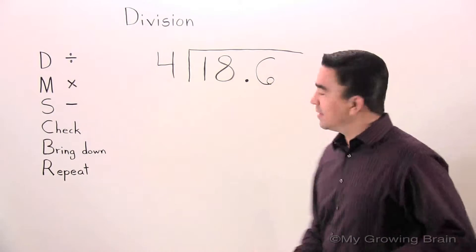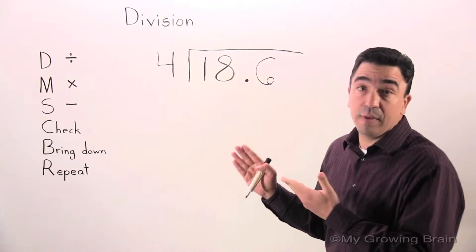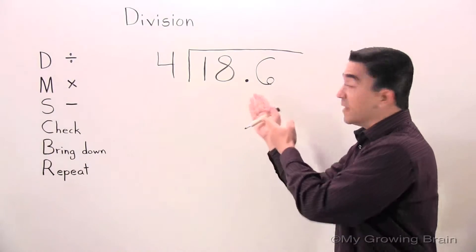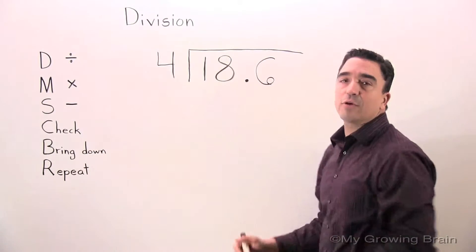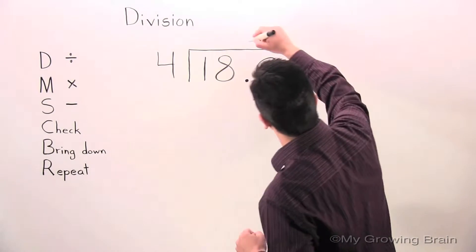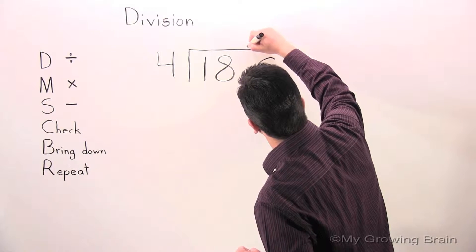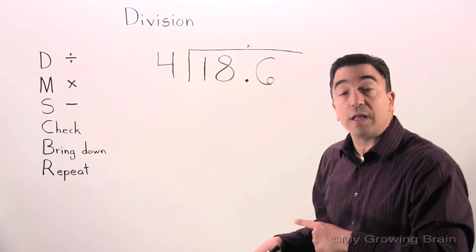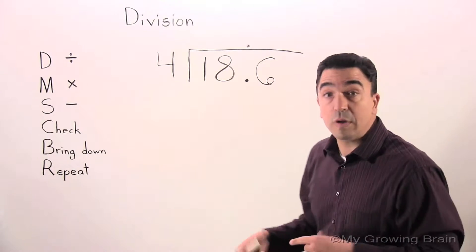All right. Now, the first thing I'm going to do here with my division problem is I'm going to raise the decimal from the dividend into the quotient. Watch. Next thing I'm going to do is organize my problem. Watch.